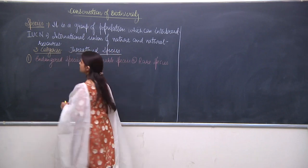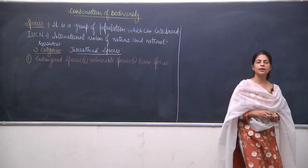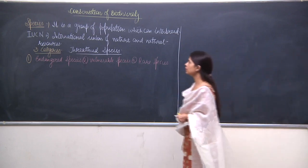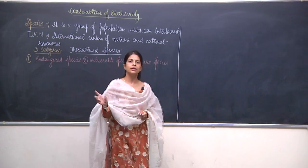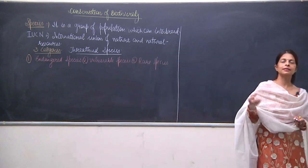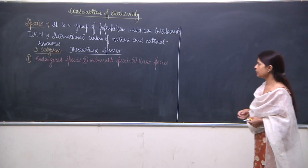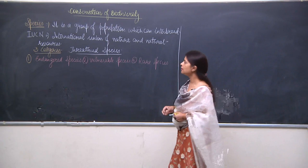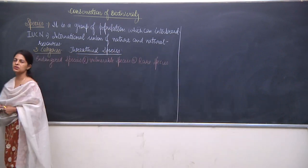All three — endangered, vulnerable, and rare — come under one umbrella which is known as threatened species. I would like to mention that in different books the division is given in different ways, so it is not about right and wrong. What I consider important is threatened species, which includes the endangered, vulnerable, and rare species.